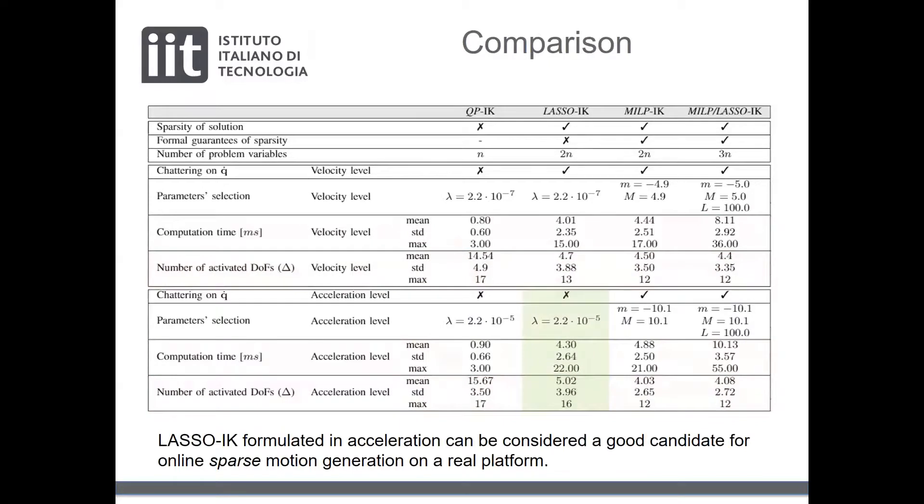From these results, we decided to select the LASSO methodology to generate online sparse motion for a box-picking task on the real humanoid biped platform COMAN+. This decision is motivated by the fact that 4 millisecond control rate is still good enough to run in real-time, and the LASSO sparse solution is very similar to the one provided by the MILP-based sparse approaches. Furthermore, the LASSO-based IK does not require any particular parameter tuning.